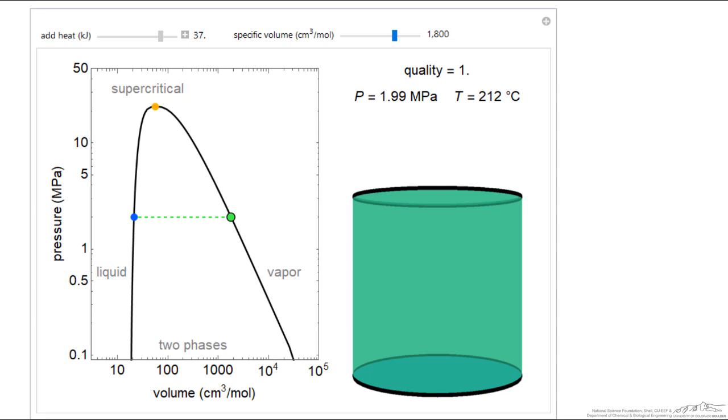This behavior is observed for all volumes greater than the critical volume, and the critical volume is represented by the orange dot.